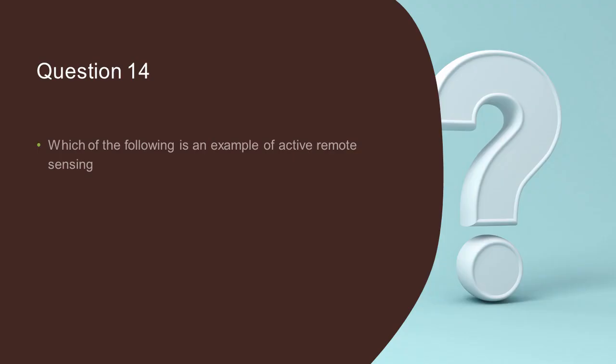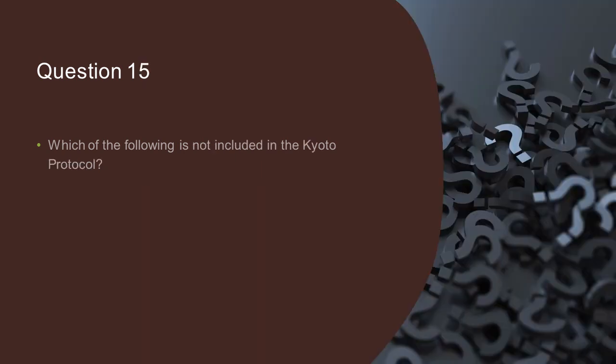Question 13: Which of the following is an example of active remote sensing? All the given options are correct — those were Lidar, Radar, and Sonar.